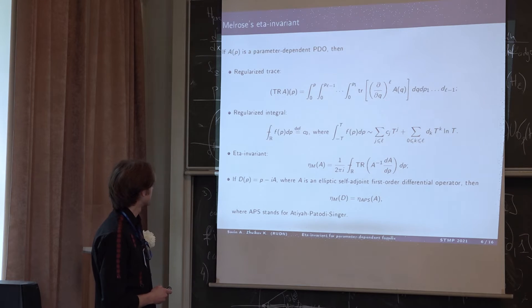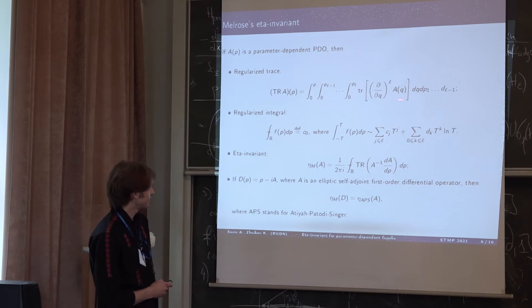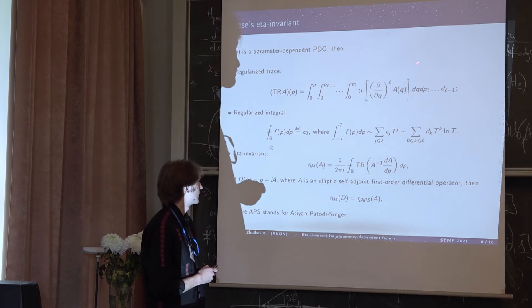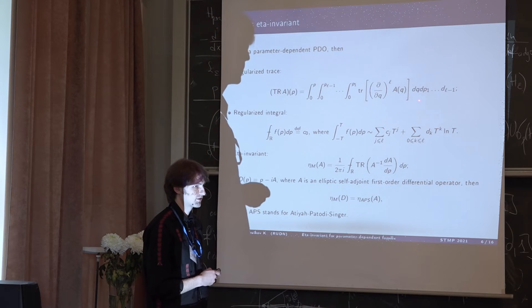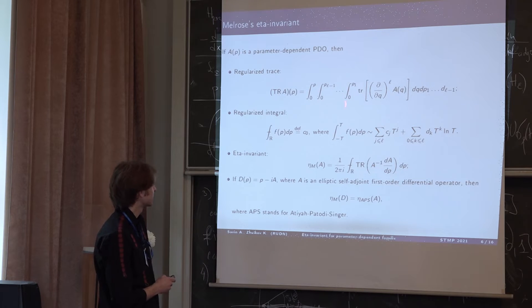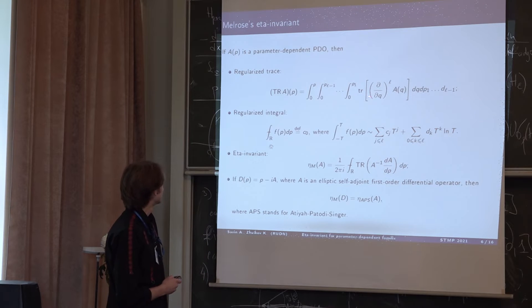On this slide, you can see the Melrose approach. A of Q is a parameter dependent PDO. As we know from the theory of such operators, if we take its derivative with respect to the parameter, its order can be lowered. So we take L times where L is supposed to be greater than the operator order plus dimension of the manifold. After that, the trace exists and then we take integrals. The order is made high again after that. This is TR capital, the regularized trace.